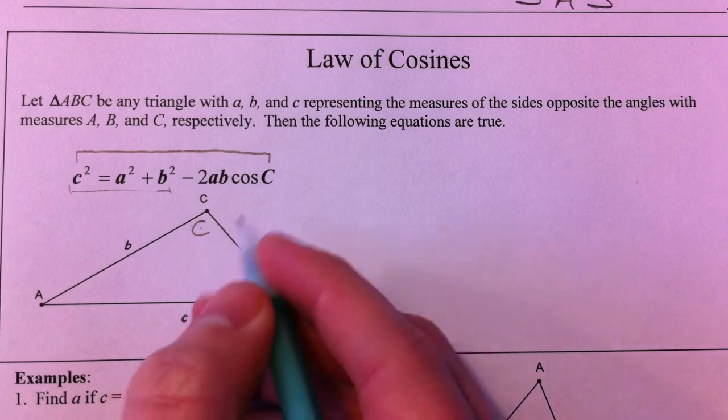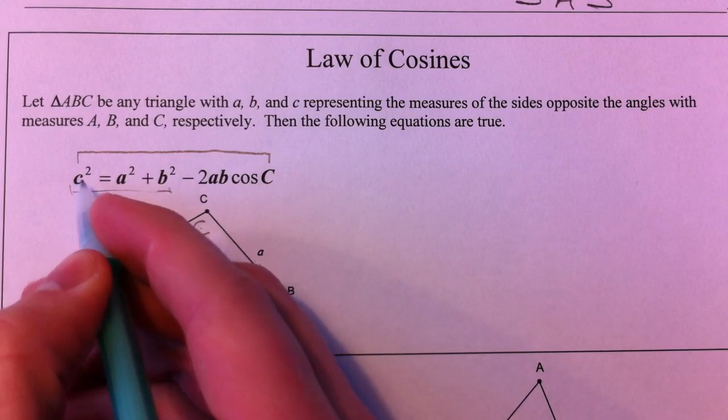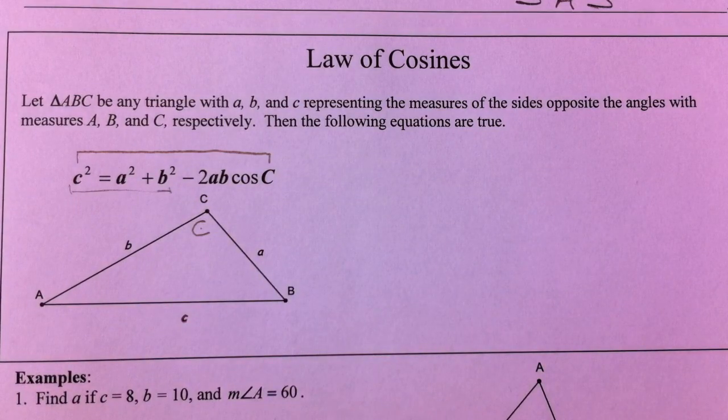they're across from each other. And so whatever this angle is, this side has to be across from it. Not all your triangles are going to be ABC.